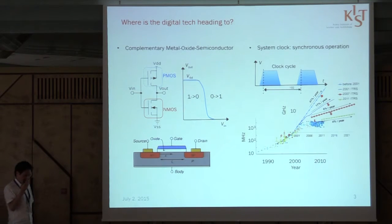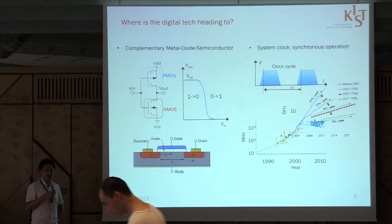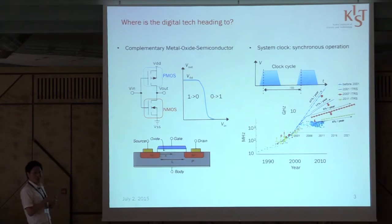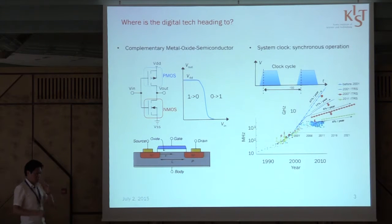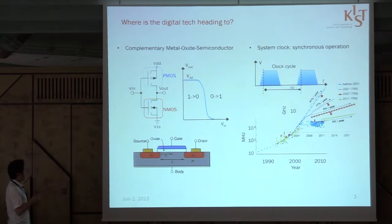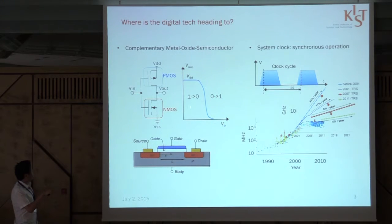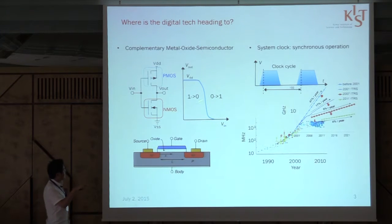I'm going to start my talk with addressing current digital technologies. If you think about a CPU, it's a very stereotypical product of digital technology. Two MOSFETs together — this is a very basic building block of a CPU, called a CMOS inverter. You need just a pair of PMOS and NMOS: a P-channel transistor and an N-channel transistor. If the input is zero, the output is one; and if the input is one, the output is zero. You simply invert the signal.